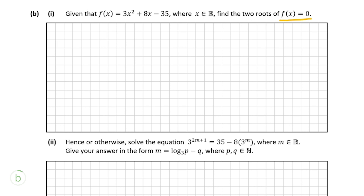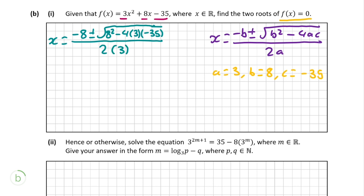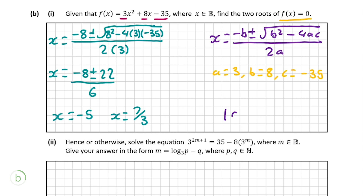For a quadratic of the form ax squared plus bx plus c, x equals negative b plus or minus the square root of b squared minus 4ac, all divided by 2a. Looking at our function, a equals 3, b equals 8, and c equals negative 35. Plugging our values in and multiplying out all brackets, we get x equals negative 8 plus or minus 22 divided by 6. Our two solutions are x equals negative 5 or x equals 7 over 3. Finding this gives the full 10 marks for this question.